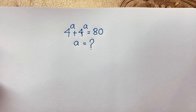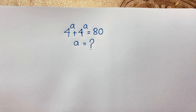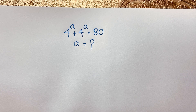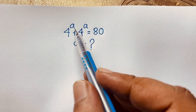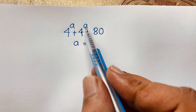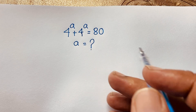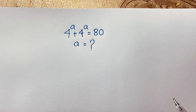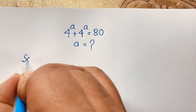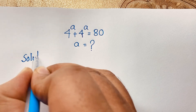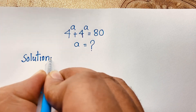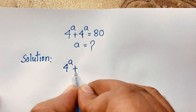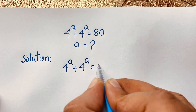Hello everyone, welcome to Russell's Classroom. Today we are solving a nice exponential math problem. This question is 4 to the power A plus 4 to the power A is equal to 80. We will find out what is the value of A in this exponential math problem solution. It is an interesting math problem.